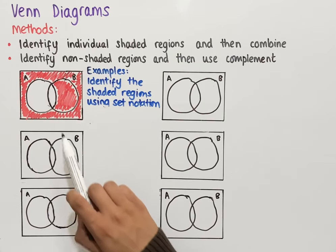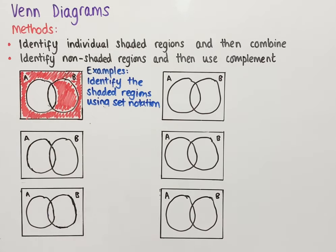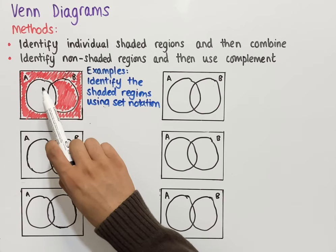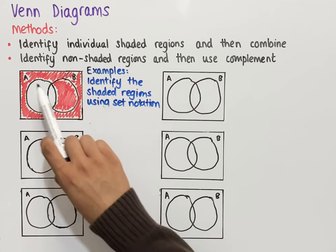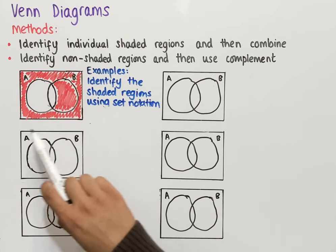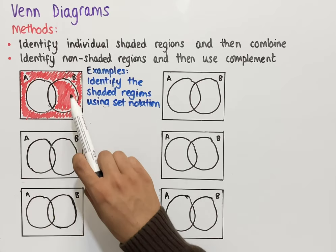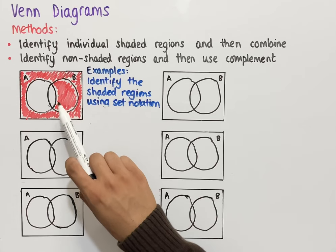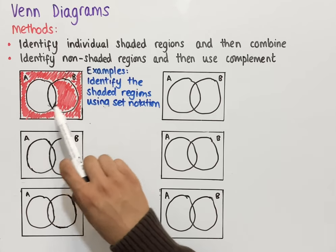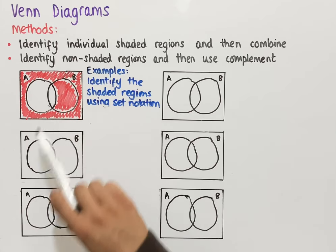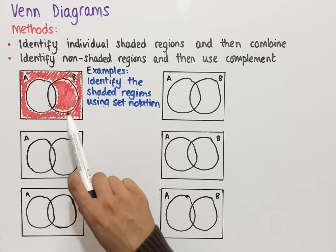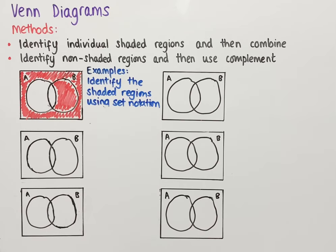The next example has the following Venn diagram. Everything outside of both circles is shaded, and also only the part of B that doesn't intersect with A is shaded. We're trying to identify what this region is using set notation.